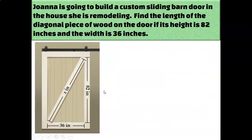In our last example, Joanna is going to be building a custom sliding barn door in the house she is remodeling. So let's help her find the length of the diagonal piece of wood, which is labeled with X in this diagram, based on the fact that the height of the door is 82 inches and the width is 36 inches. So we've pretty clearly got a right triangle here. We're going to do 36 squared plus 82 squared equals X squared.